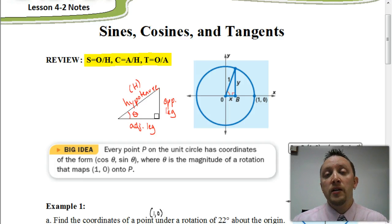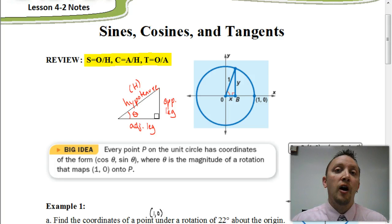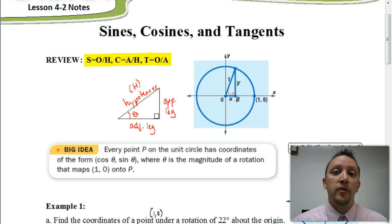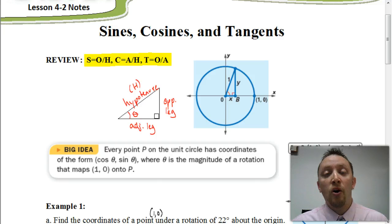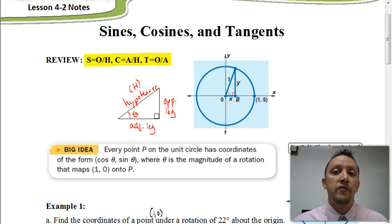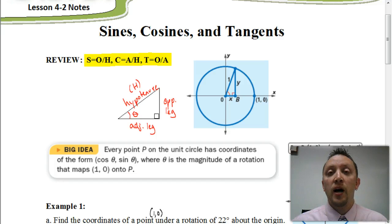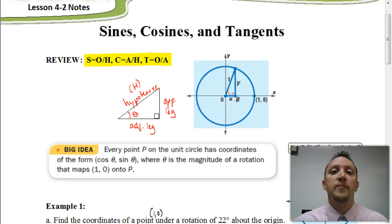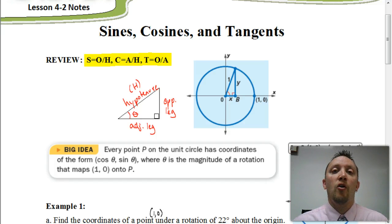To get us started, if you look in the book, they really kind of jump to conclusions as far as what you should already know, but I want to make sure that we understand some of the basics. So let's start with the phrase SOHCAHTOA. The sine of an angle is equal to the opposite over the hypotenuse. The cosine, or CAH, would be the adjacent leg over the hypotenuse. And lastly, the tangent is equal to the opposite over the adjacent.